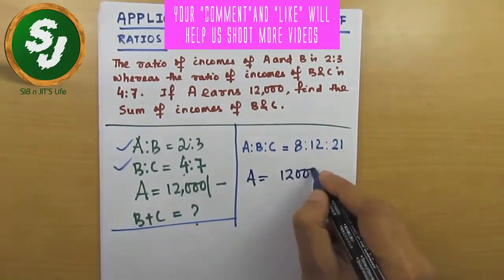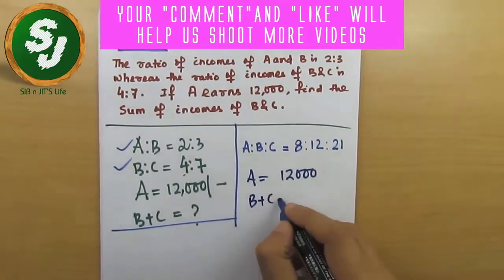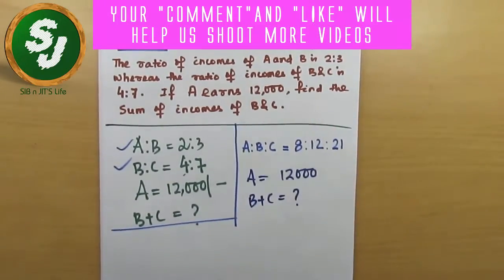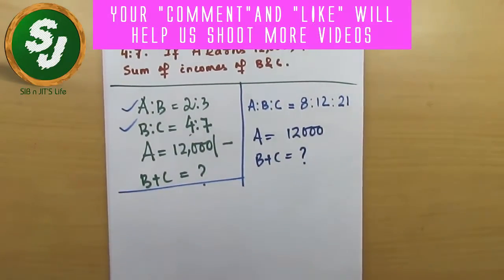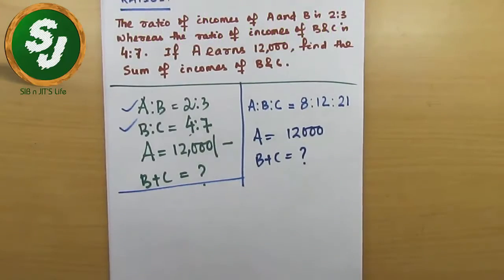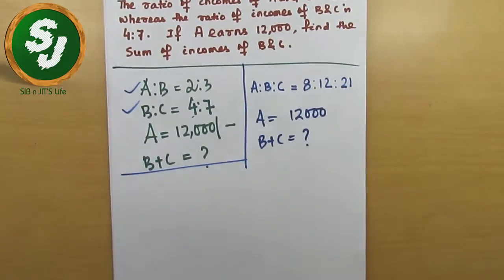Now what was given in this information? A equals 12,000, it was given. And it is asking B plus C equals question mark. So let me remind you once again, we learned a shortcut technique to write something by something into a number which will give you the value of the question which is asked, and that is called the shortcut to K concept.